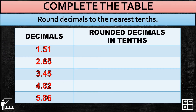Okay, let's try a practice activity. I have here: 1.51, 2.65, 3.45, 4.82, and 5.86. Can you round these decimals to the nearest tenth, just like we did? I'll give you 20 seconds. Reminder: the tenths place is located right after the decimal point. Your 20 seconds starts now.